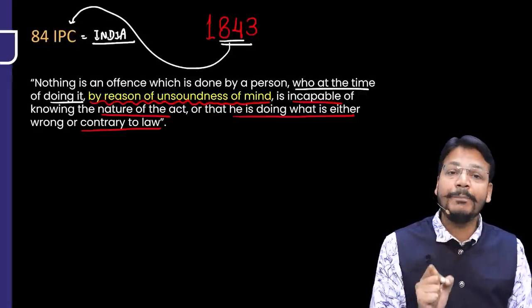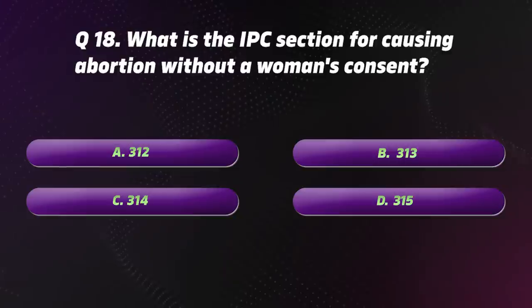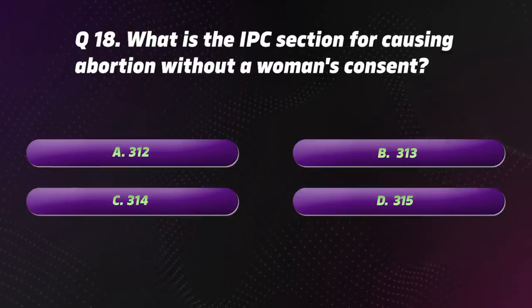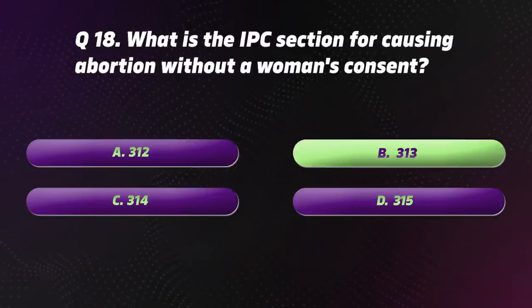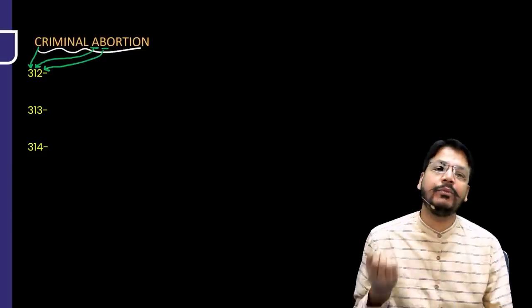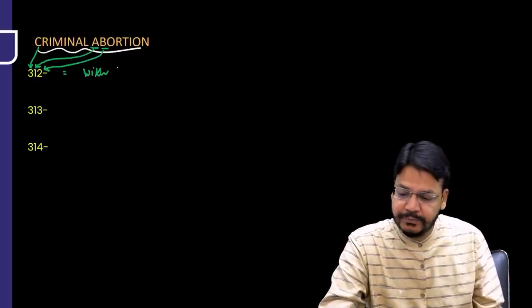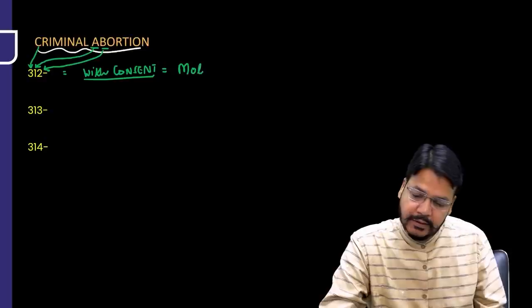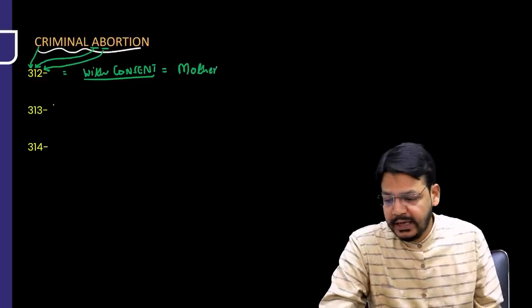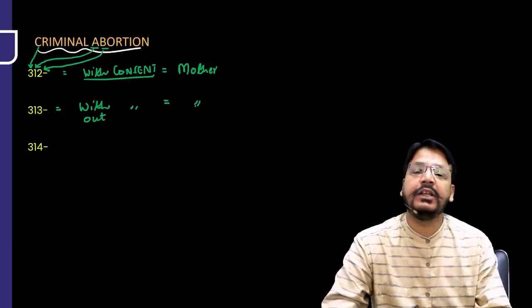Question 18. What is the IPC section for causing abortion without a woman's consent? The correct option is B — Section 313. If abortion is performed with the consent of the mother, it is IPC 312. If it is performed without the consent of the mother — criminal abortion — it is IPC 313.